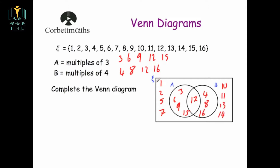Whenever you're doing a Venn diagram question, I always recommend you check you've got all the numbers or all the data. We've got the numbers 1 to 16, so we should have 16 numbers total — and we've got 16 numbers in there. So that's it, we've completed the question. That's a straightforward Venn diagram: numbers in A, numbers in B, the middle section where they overlap is anything in both A and B, and anything on the outside is anything that's not in A or B.